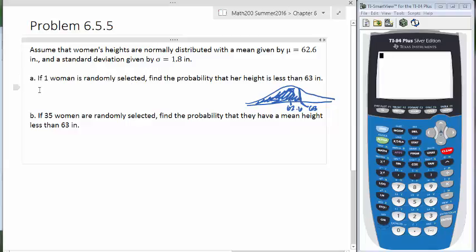So now that we have our drawing, let's set up our probability notation for this. We're going to use a p-notation and we're looking at x less than 63.